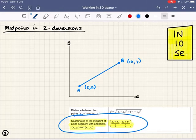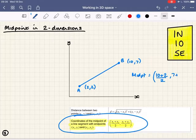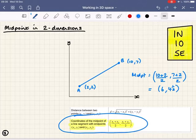So the x coordinate will be 10 plus 2, which are the two x coordinates, divided by 2. We're going to find the average. And the y coordinate, 7 plus 2 over 2. And let's work that through. That gives 6 and 4.5. So the midpoint of that line segment is 6, 4.5.